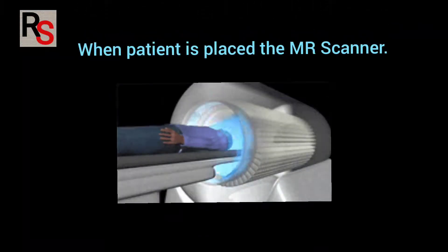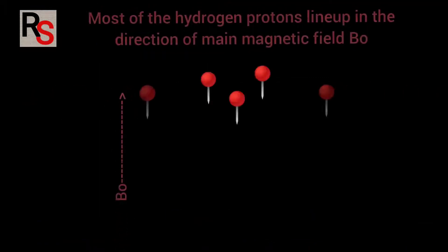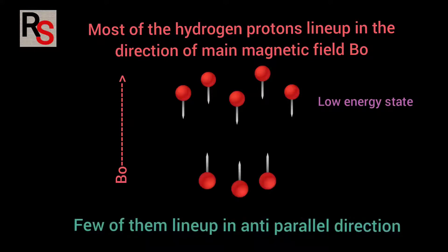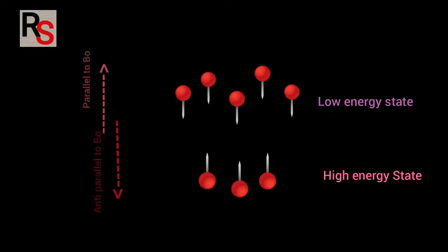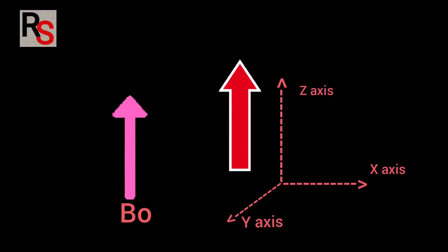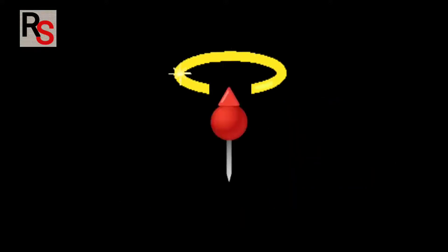When patient is placed inside the MR scanner under the influence of strong magnetic field B0, most of them line up in the direction of main magnetic field known as low energy state and few line up directly opposite to the main magnetic field known as high energy state. Since more number of protons are pointing parallel in the direction of main magnetic field than anti-parallel, thus creating a net magnetization in the direction of main magnetic field B0 called longitudinal magnetization which is represented by net magnetic vector along Z axis.